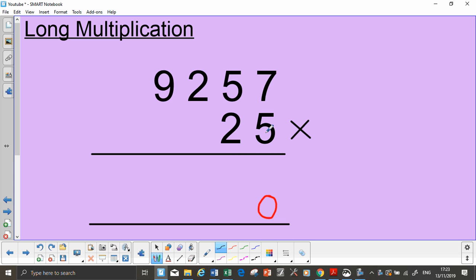So the first line I'm going to multiply everything by this 5. So 5 times 7 is 35, so you put your 5 here and a little small 3.